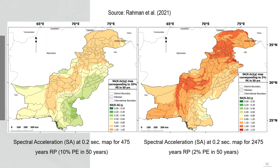This result is from our own recently published study, where we used spatial smoothing and explicitly considered the active faults to forecast the hazard. This is the spectral acceleration at 0.2 second (Ss) map, showing both the DBE and MCE levels. The contribution of different faults and seismotectonic features is clearly visible in the hazard output when this method is applied explicitly.